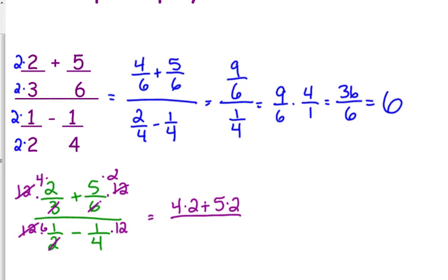12 over 2 reduces to give me 6, so I've got 6 times 1. 12 over 4 gives me 3. That's not plus, that should be minus. 1 times 3. So I've got 8 plus 10 over 6 minus 3. 18 over 3, which gives me 6.